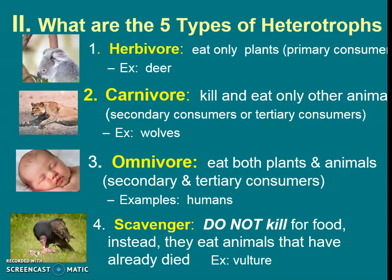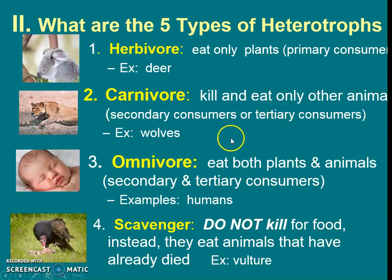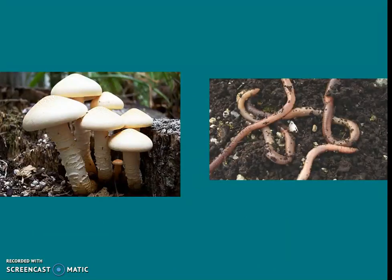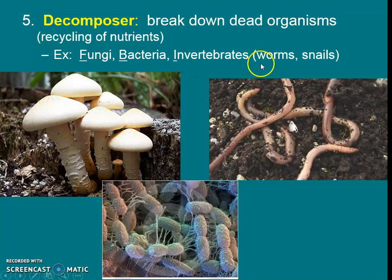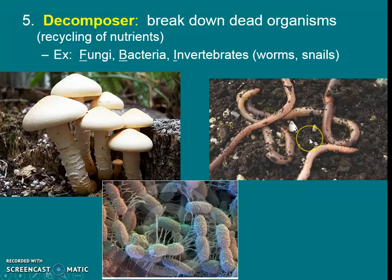If I went too fast, make sure you pause and ensure those key terms are highlighted in your notes, and that you've jotted down examples, keywords, or the definition depending on what was open in the guided notes. Now there's also one last type, which is decomposers — they are in charge of breaking down and recycling nutrients. There are three major examples that form the abbreviation FBI: fungi, bacteria, and invertebrates. Invertebrates meaning worms or snails. So here we have fungi, mushrooms, worms, and bacteria. Remember, worms are what we mean by invertebrates.